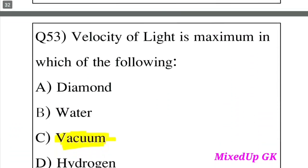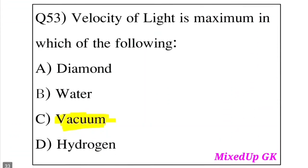Question 53: The velocity of light is maximum in which of the following? Option A: Diamond. Option B: Water. Option C: Vacuum. Option D: Hydrogen. The answer is Option C, Vacuum. The velocity of light is maximum in vacuum.